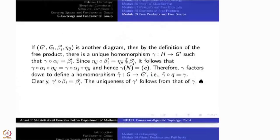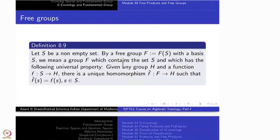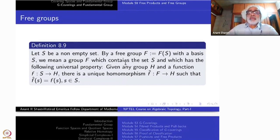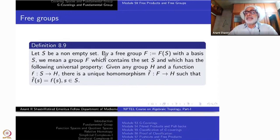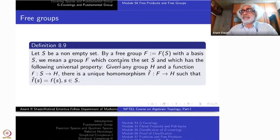So we come to a notion called free groups. Let us first make a definition, similar to the definition of push-outs but much simpler. Once again it is given by a universal property. Start with a non-empty set S. By a free group F_S — which we denote by F_S because it depends upon S — with S as a basis, we mean a group F which contains S as a subset and which has the following universal property: take any group H and a set-theoretic function from S to H. That function has a unique extension f-hat, which is a homomorphism from the whole group F to H, and f-hat is unique. Such a thing is called a free group.